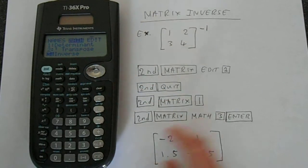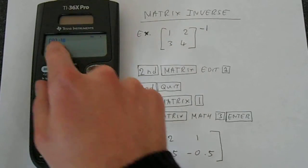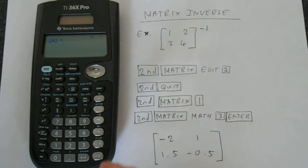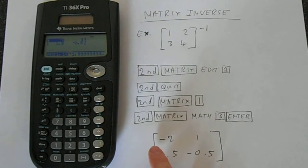We're wanting the inverse. So if we go down to 3 or press 3, we've got this on screen, A and then the inverse. We press enter and it calculates that and we get the result that we expect.